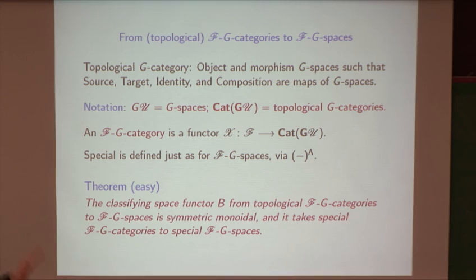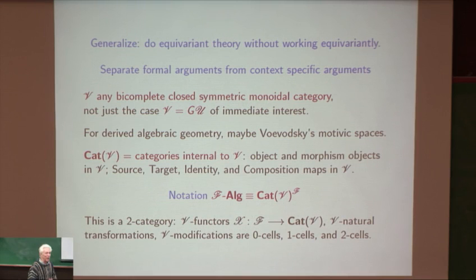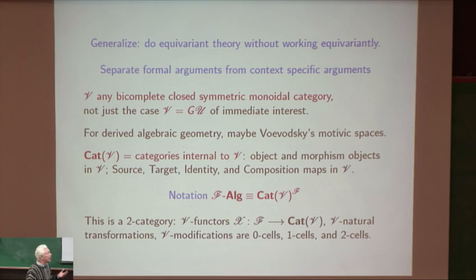I want to do equivariant theory without working equivariantly—it clears the mind, makes it easier to think, and it separates formal arguments from things specific to the relevant context. So everything I'm doing will work with any bicomplete, cocomplete, complete, closed symmetric monoidal category, not just G-spaces, which is the case we're immediately interested in. Mark told me there is a new paper out which does additive infinite loop space theory motivically, and this theory will probably eventually feed right in and give a multiplicative elaboration of that.